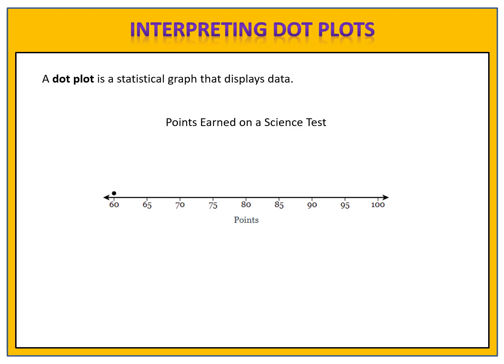One dot above the 60 means one student earned a grade of 60 points. Two dots above the 65 means that two students earned a grade of 65. We have seven dots above the 70, so seven students earned a grade of 70. The teacher continues the process, putting one dot for each student on the dot plot.